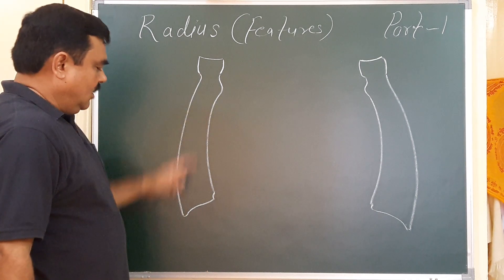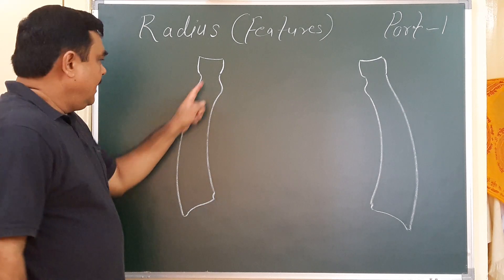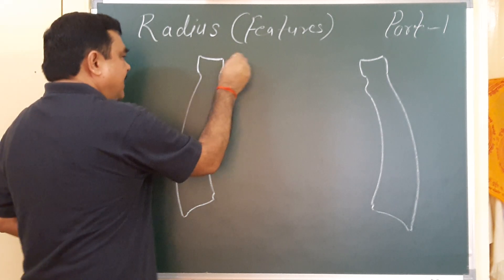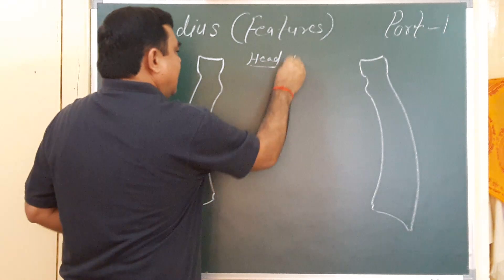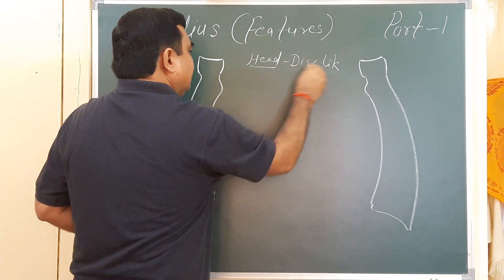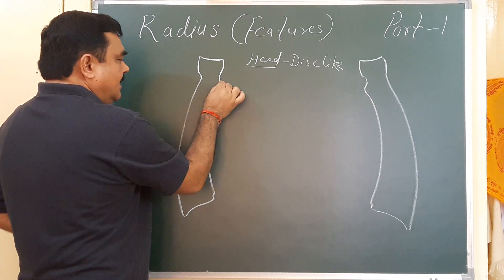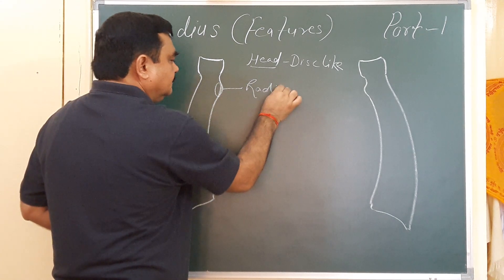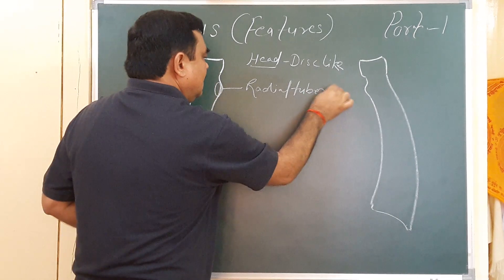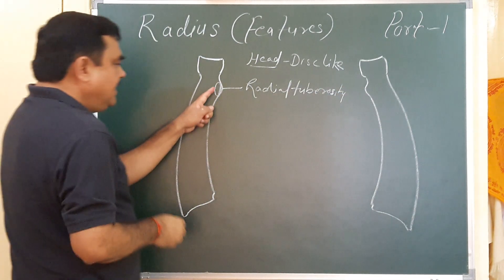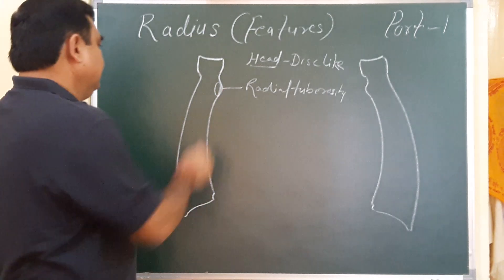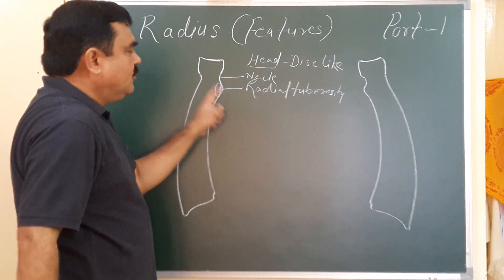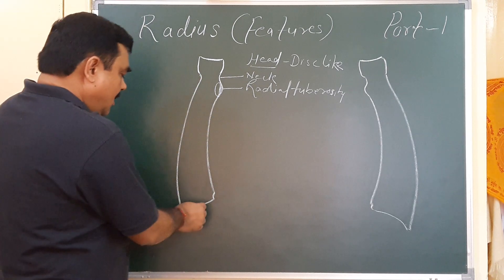The radius has an upper end, lower end, and shaft. The features of the upper end: the upper end has a head which is disc-like. Then there is a neck. Then there is the radial tuberosity. The anterior part of the tuberosity is smooth and the posterior part is rough. So this is the head, neck, and radial tuberosity — these are the features of the upper end.